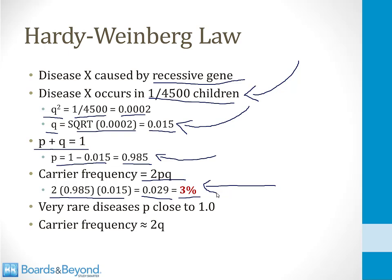Now one other point: for very rare diseases, p is often very close to 1. In this example, p was 0.985, which is very close to 1. In these situations, you can often just assume p is 1 for simplicity and calculate the carrier frequency as 2 times q instead of 2 times p times q. In this example, if we had said the carrier frequency is 2 times q, it would have been 2 times 0.015, which works out to 3% — basically the same number we got anyway.